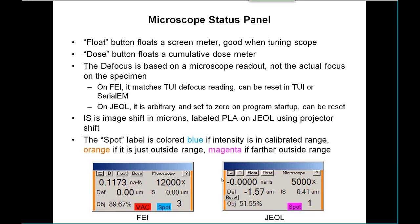The microscope status panel has a couple of cryptic buttons. The float button will take this screen meter and float it on a separate little window that you can position right next to where you're looking while you're tuning the microscope. The dose button floats another little window that shows a cumulative dose.